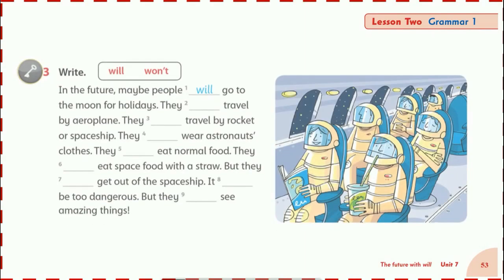Please open your class book, page 53, unit 7, lesson 2, grammar 1, exercise number 3. In this exercise, you need to write 'will' or 'won't' in the blanks. As in the first example, look at the picture and imagine what will happen in the future. If the thing may happen, use 'will'; if it may not happen, use 'won't.'